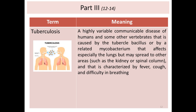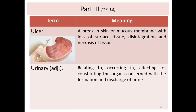Tuberculosis usually involves the lungs but may spread to other areas like the kidney and spinal column. It is characterized by fever, cough, and difficulty breathing. Ulcer is a break in the skin or mucous membrane — either an external skin ulcer or an internal ulcer such as a gastric or peptic ulcer — with loss of surface tissue, disintegration, and necrosis.